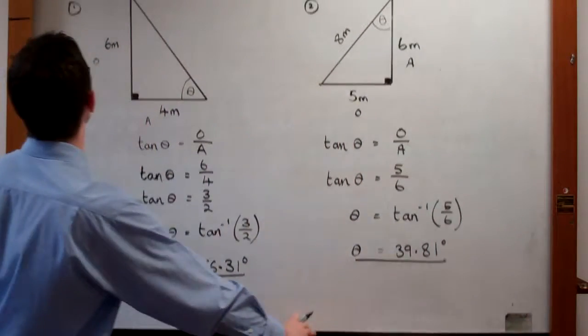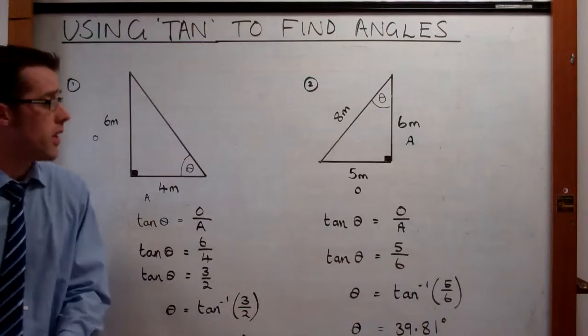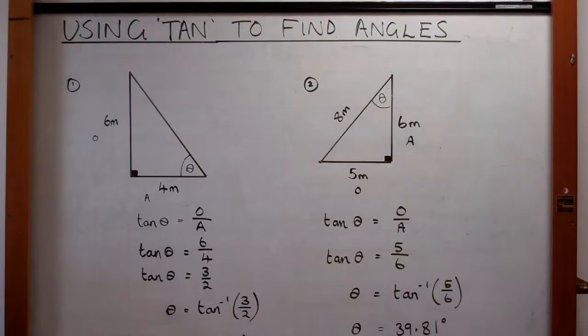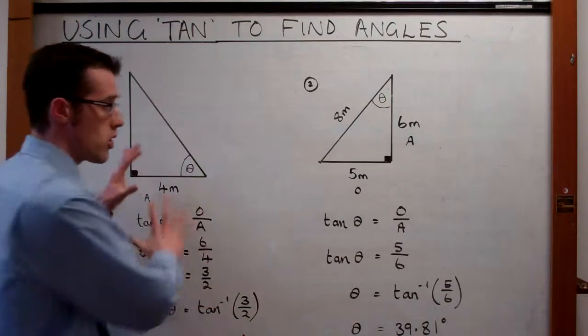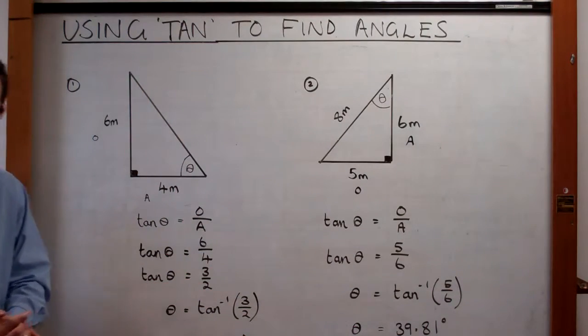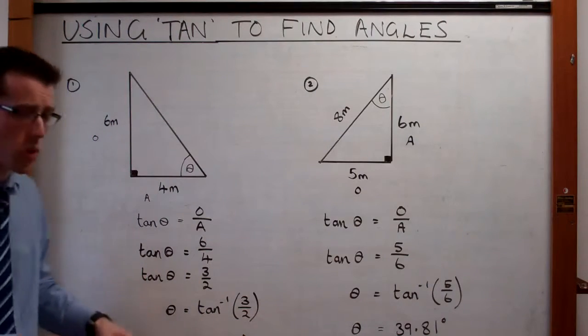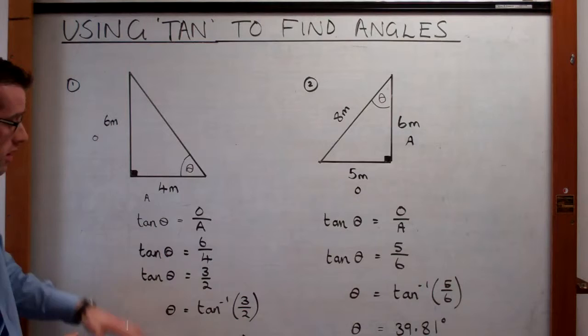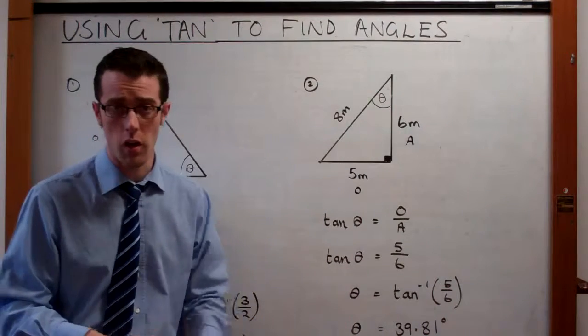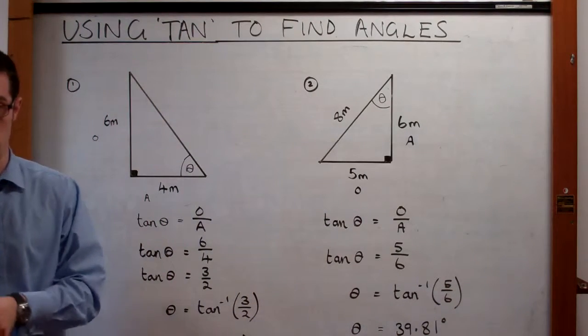So that is how we use tan to find angles in right-angled triangles. Remember, what I want you to do is make sure this is copied entirely into your notes, and rewind to go over things you're not quite sure of, so that when you come in tomorrow you've got a very good understanding of how to find an angle from a basic right-angled triangle using the tan ratio.